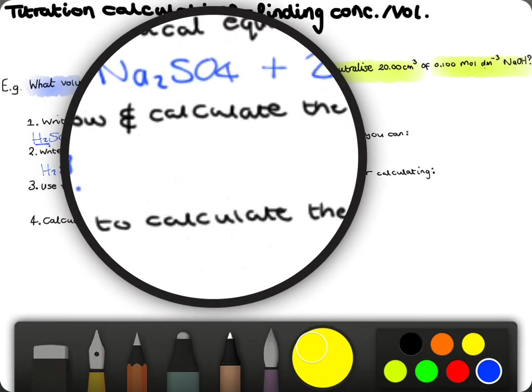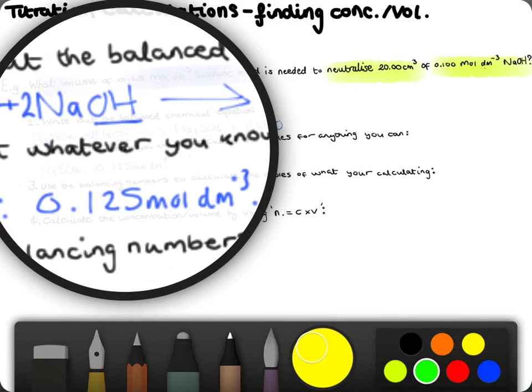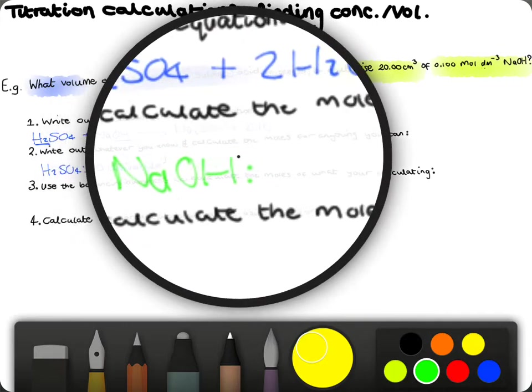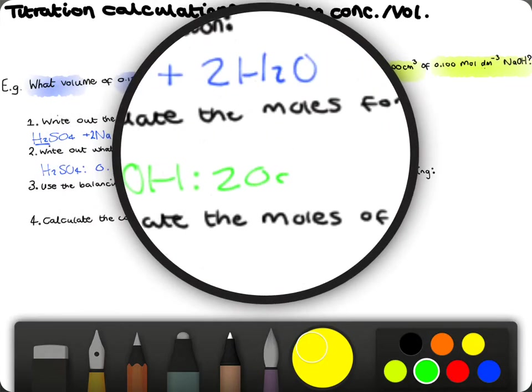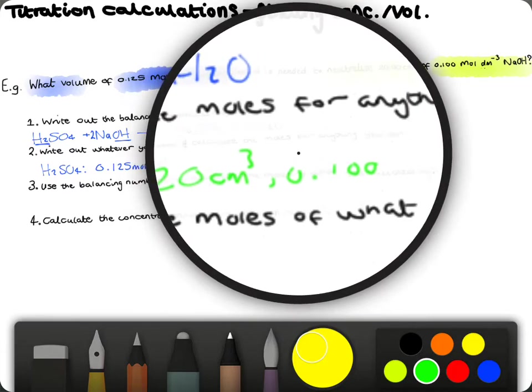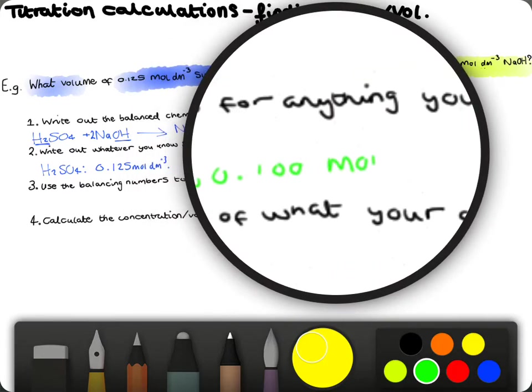And now, for our sodium hydroxide, I just had to find my notes for a second, we have 20 centimetres cubed volume, and we have a 0.1 moles per decimetre cubed concentration.